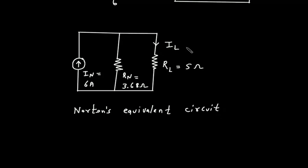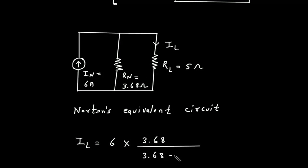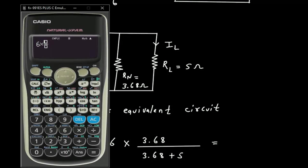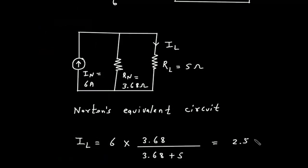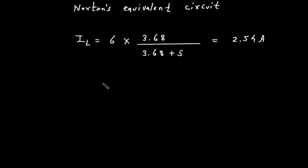Here again we can use the current division rule. By using current division rule, IL is equal to this current — that is 6 ampere — multiplied by the opposite branch resistance, that is 3.68, divided by 3.68 plus 5. So this will be 6 multiplied by 3.68 divided by 3.68 plus 5, which gives 2.54 ampere.